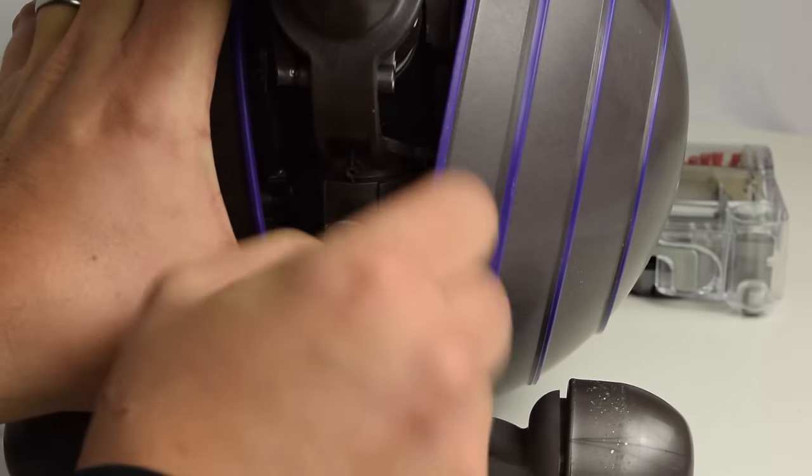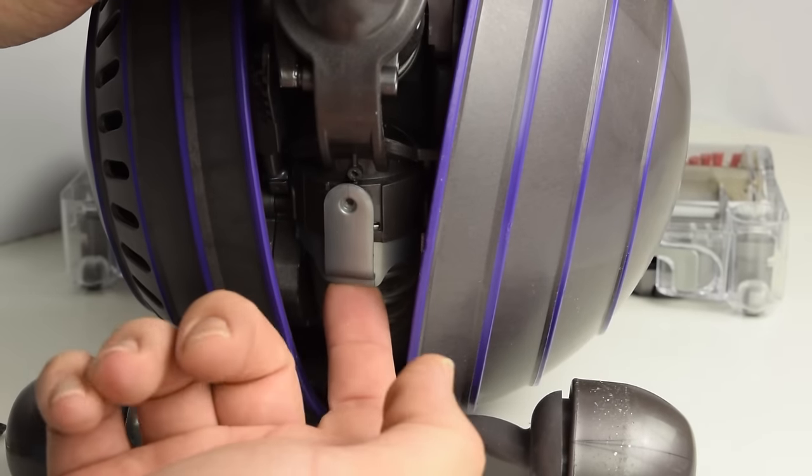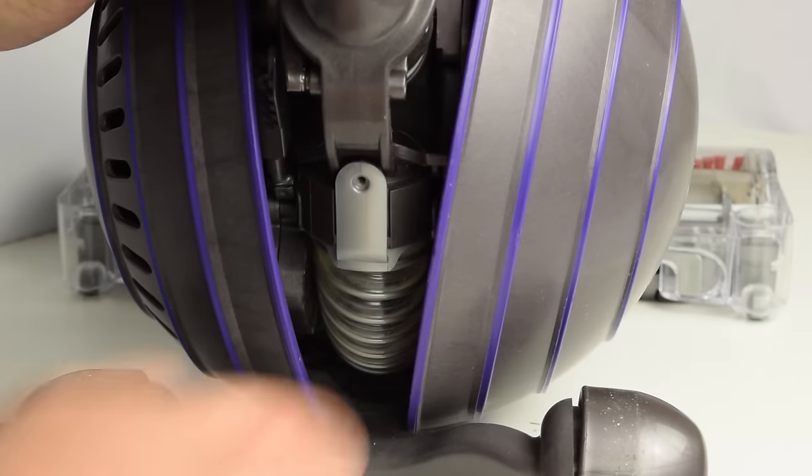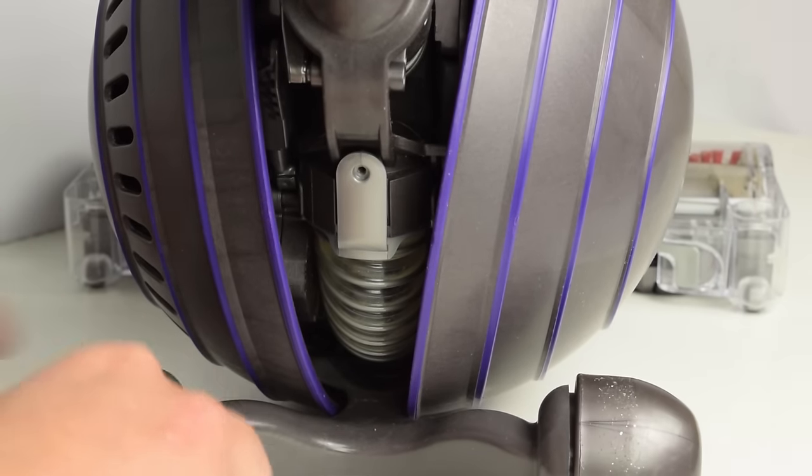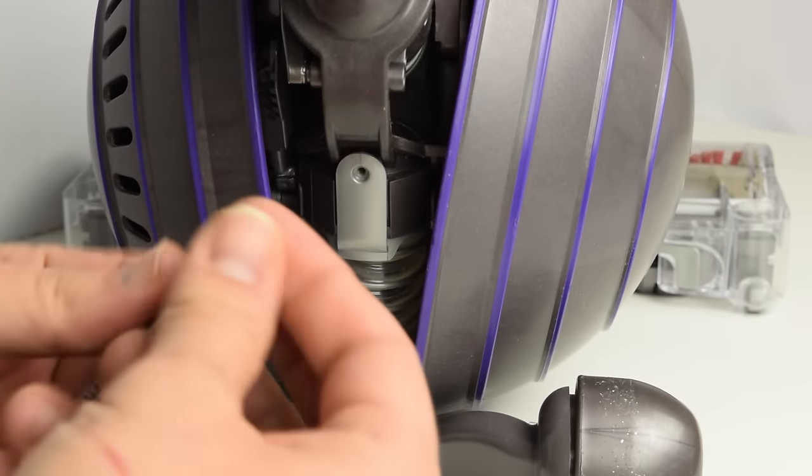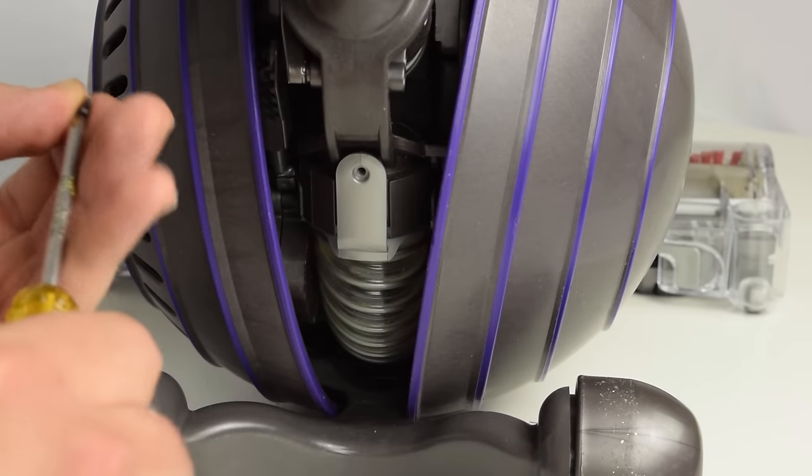To reattach it, basically you can kind of get a hold of it from underneath and push up. You should also hear another little snap to let you know that it's in place. If you manage not to lose your screw, then you just screw it back up.